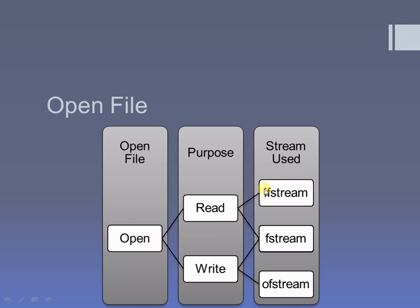An object of the ifstream class is used to access the open member function of the ifstream class. If you purely want to perform the write operation, you have to use the ofstream class. The object of the ofstream class is useful while calling the member function open to open a file for writing purpose. But if you want to perform both operations on the same file, you will use the fstream class, which is helpful to perform both input as well as output operations — that is, for both reading and writing.